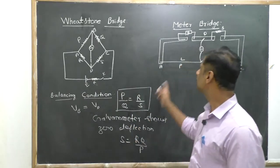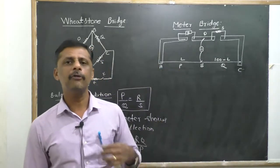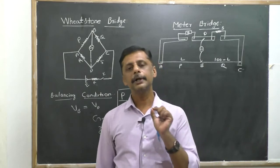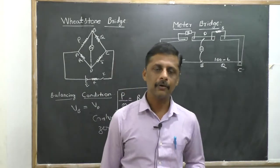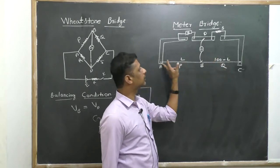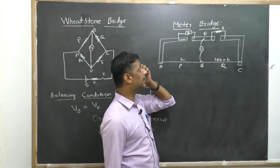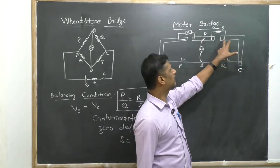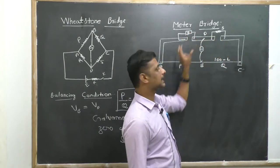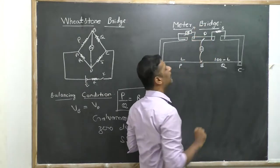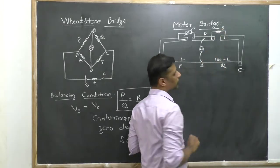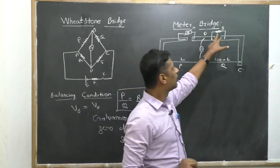The first application of the Wheatstone network is the meter bridge. The meter bridge is an apparatus used to find the value of unknown resistance as well as the resistivity of the material of the wire. In its construction, it consists of a wooden board. Between two points A and C, a wire of length 100 centimeters is connected. Across the left gap, a standard or variable resistance is connected, and across the right gap, the unknown resistance whose value has to be found, or the wire whose resistivity has to be determined, is connected.